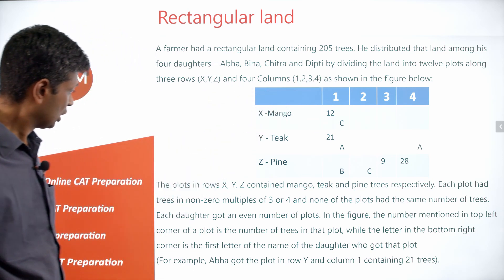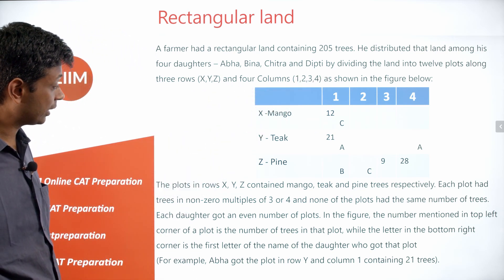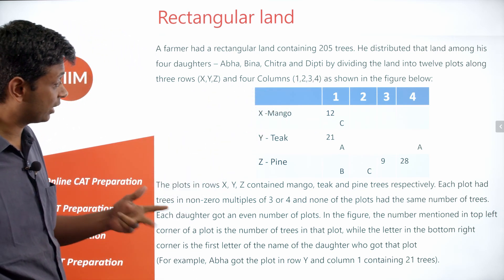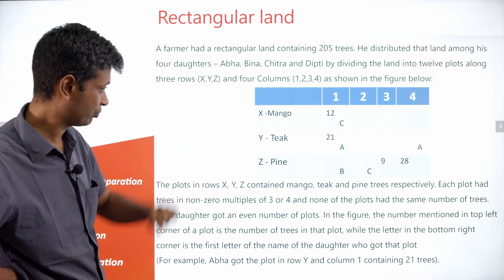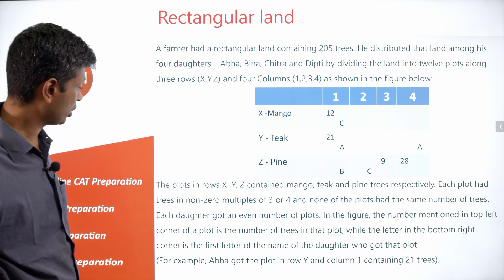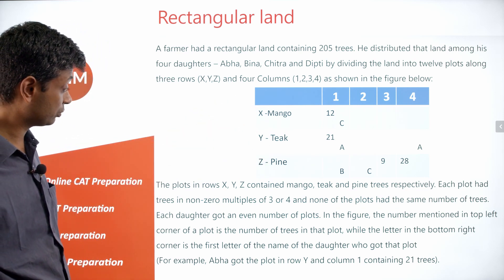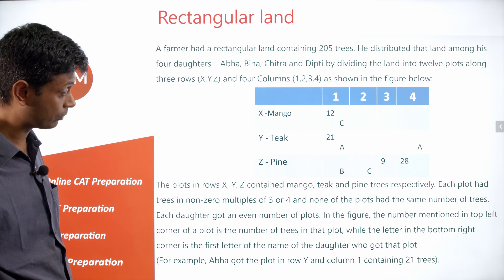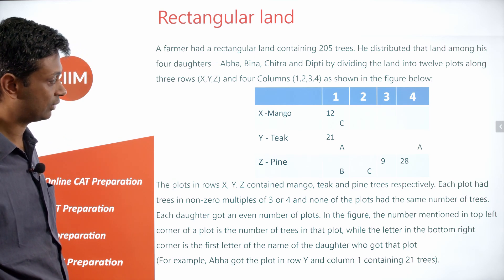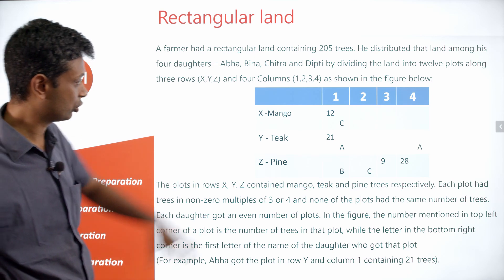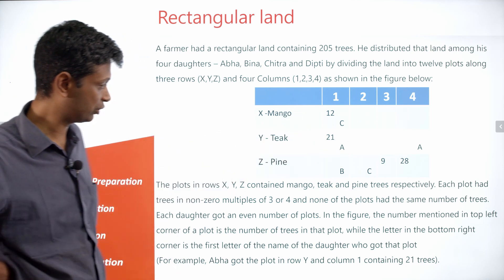The plots in rows X, Y, and Z contain mango, teak, and pine respectively. Each plot had trees in non-zero multiples of three or four, and none of the plots had the same number of trees. So it's 12, 21, 28 — multiples of three or four.